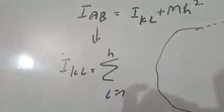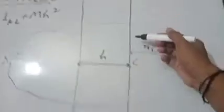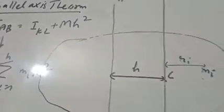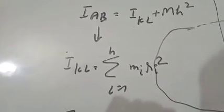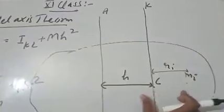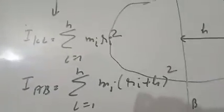So for the i-th particle about axis K-L, this axis around this particle the distance is r_i, and h is the distance between the two parallel axes. So for the i-th particle about axis A-B, this will come: i running from 1 to n, m_i times (r_i + h) squared. This distance is r_i plus h, so when you solve it, you open it up.